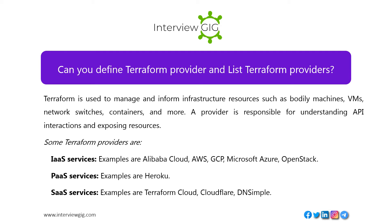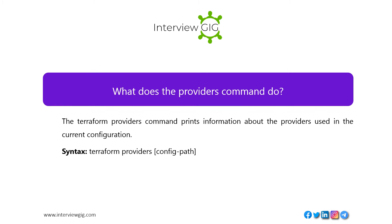Can you define Terraform providers and list some? Terraform is used to manage infrastructure resources such as physical machines, VMs, network switches, containers and more. A provider is responsible for understanding API interactions and exposing resources. Some Terraform providers include IaaS services such as Alibaba Cloud, AWS, GCP, Microsoft Azure and OpenStack; PaaS services such as Heroku; and SaaS services such as Terraform Cloud, Cloudflare and DNSimple. The Terraform providers command prints information about the providers used in the current configuration. Syntax: terraform providers [config-path].